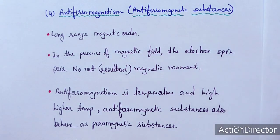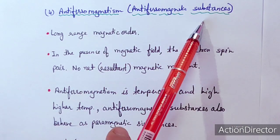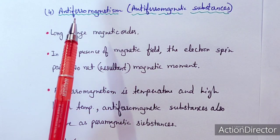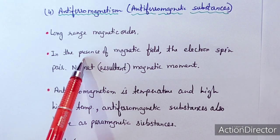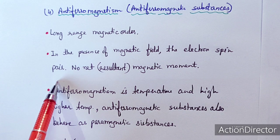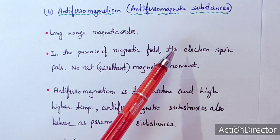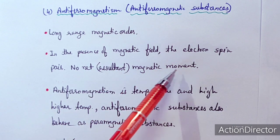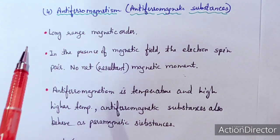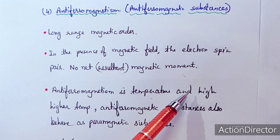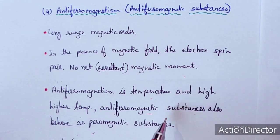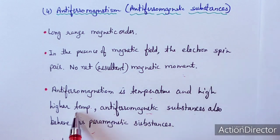The next type of magnetically concentrated substance is the antiferromagnetic substance. Antiferromagnetism is again a long-range magnetic order. In the presence of a magnetic field, the electron spins pair rather than align in the same direction, so no net or resultant magnetic moment is observed. Antiferromagnetism is temperature dependent, and at higher temperatures antiferromagnetic substances also behave as paramagnetic substances.